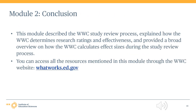This concludes the second module in the WWC Group Design Standards Training. In this module, we described each of the steps in the WWC study review process, explained how the WWC determines research ratings for study findings and a study-level research rating, described how the WWC determines effectiveness ratings, and provided a high-level overview of how the WWC calculates effect sizes during the study review process. You can access all of the resources mentioned in this module on the WWC website at whatworks.ed.gov.